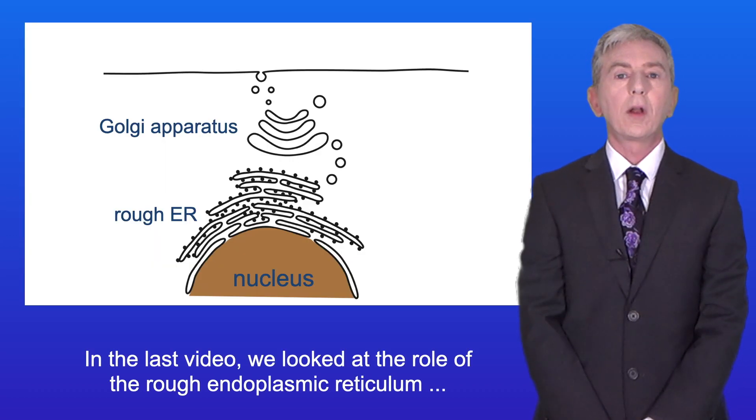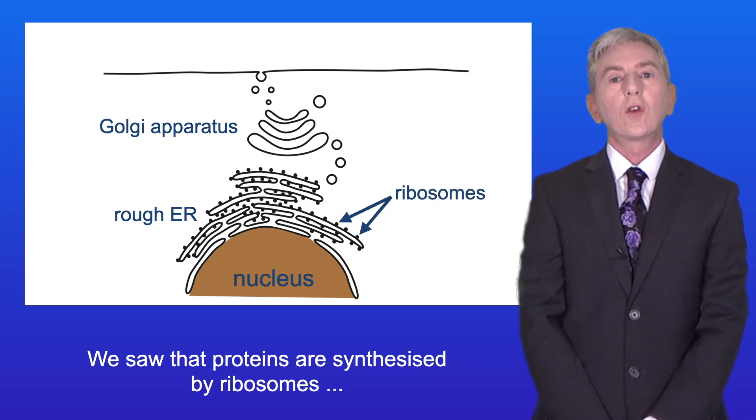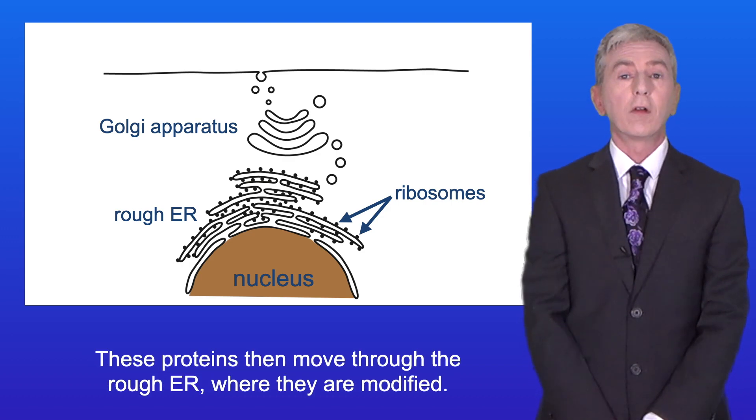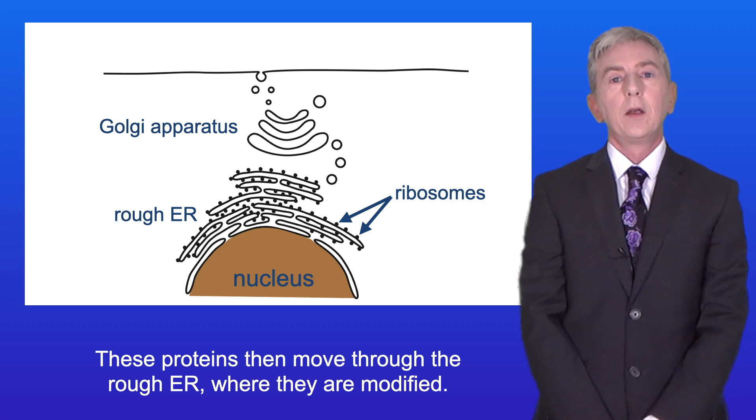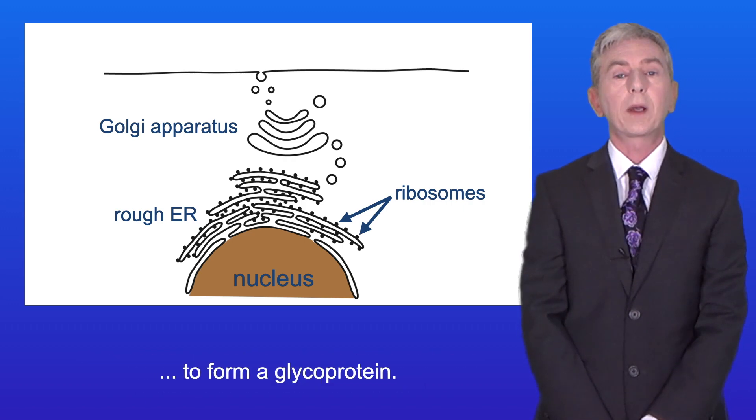In the last video we looked at the role of the rough endoplasmic reticulum and Golgi apparatus. We saw that proteins are synthesized by ribosomes on the membrane of the rough ER. These proteins then move through the rough ER where they're modified. For example, a carbohydrate molecule can be attached to the protein to form a glycoprotein.